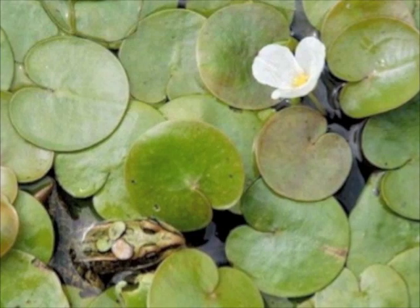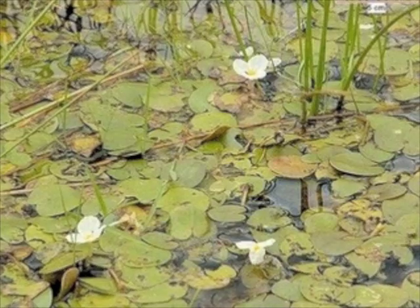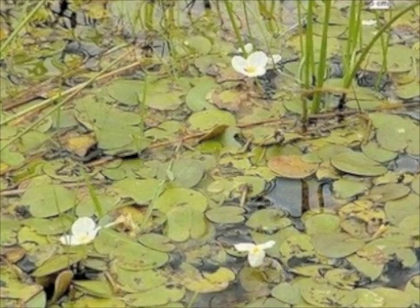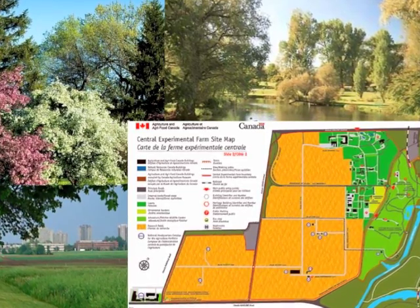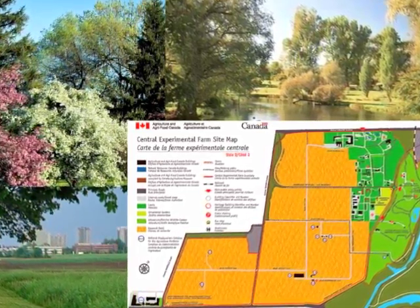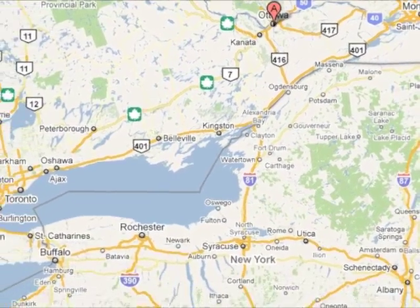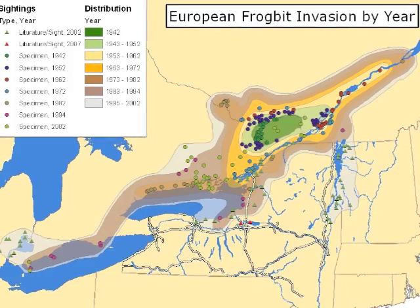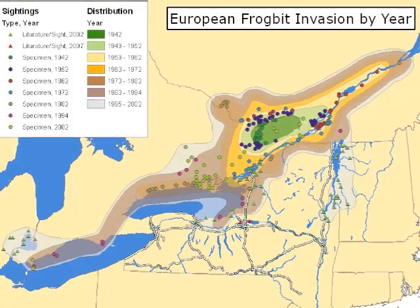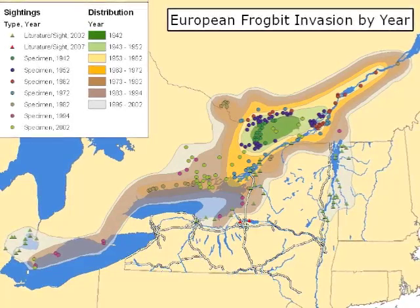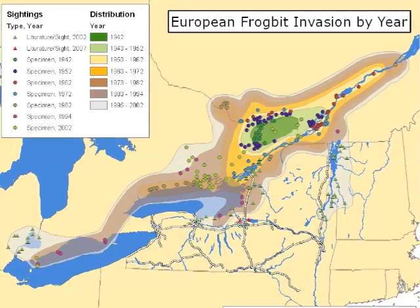European or common frogbit is native to Europe and Asia. In 1932, this invasive species was intentionally introduced as an ornamental water garden plant to the arboretum of the Central Experimental Farm in Ottawa, Canada. Shortly thereafter, the plant spread along the St. Lawrence River and into tributaries. The first record of frogbit in the United States was in 1974 in northern New York State, likely arriving via boats and boat trailers from Canada.